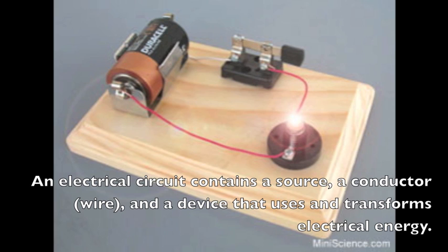An electrical circuit contains a source, which is the battery, a conductor, which is the wire, which means something that electricity can pass through, and a device that uses and transforms electrical energy. In this case, that would be the light bulb transforming electrical energy into light and heat.